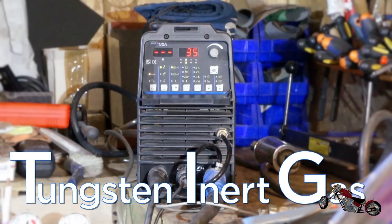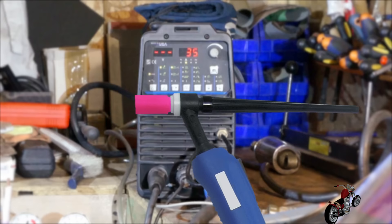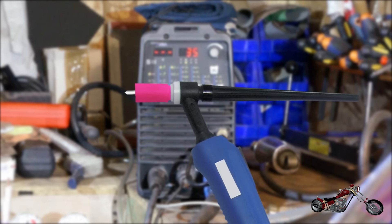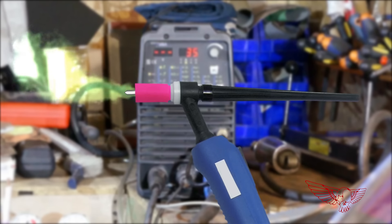TIG, tungsten inert gas, where the tungsten is the material of which the electrode is made of and the inert gas is the gas coming out of the torch's nozzle, commonly argon gas.